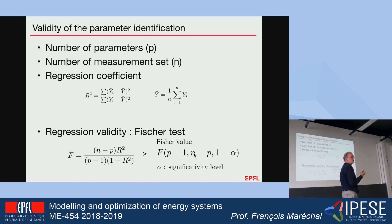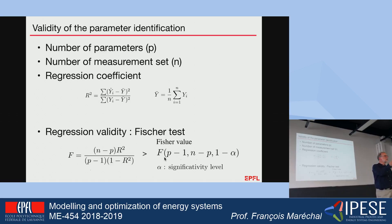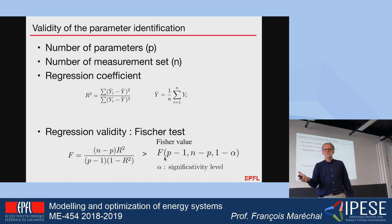So it is not only about solving a nonlinear optimization problem, but also verifying that the solution makes sense with respect to the parameters we want to calculate. This tells me how many experiments I need in order to calculate the number of parameters I have. Do not make one experiment to calculate two parameters — it will not be enough. Although the problem may converge, the Fisher test will tell you it is impossible.